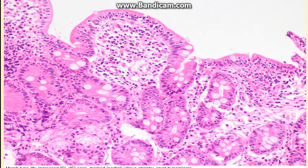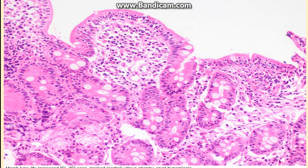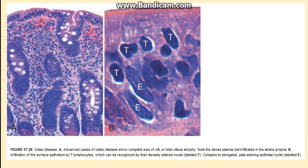For morphology, the Marsh grading method is used. We can see the intraepithelial lymphocytes, villus atrophy where the villi are shortened, and crypt hyperplasia. As the disease progresses, the villi become very short, resulting in total villus atrophy with a further increase in intraepithelial lymphocytes.